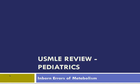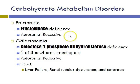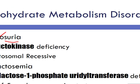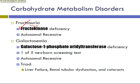Pediatrics coming at you. So inborn errors of metabolism, let's get started. We're going to start with carbohydrate metabolism disorders. The two I'm going to talk about that the boards like to test you on are fructosuria and galactosemia. Fructosuria — fructose in the urine — is a problem with fructokinase. You have a fructokinase deficiency and it is autosomal recessive. It causes elevated fructose and its metabolites in the urine and the blood.